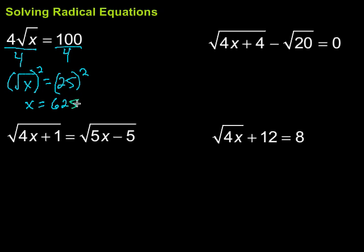So we have x equals 25 squared is 625. So then I'm going to go ahead back and check. Replace x with 625. The square root of 625 is 25, 25 times 4 is indeed 100. So that one works.